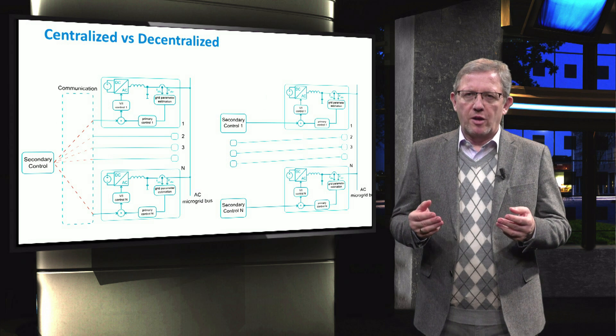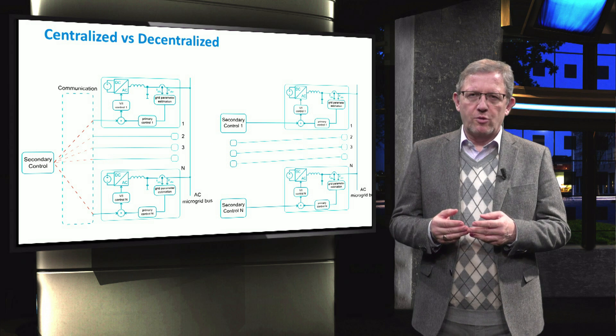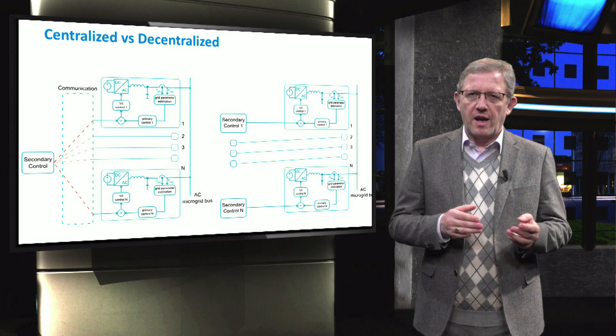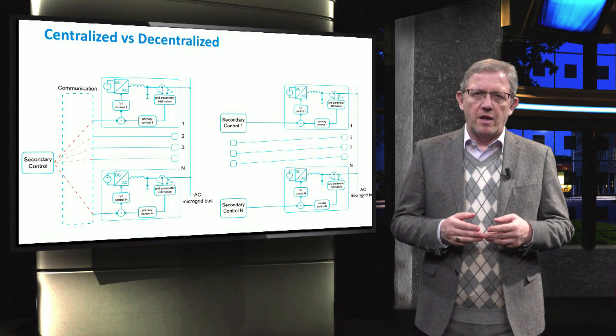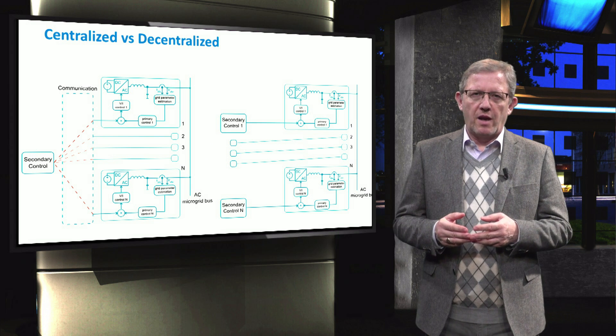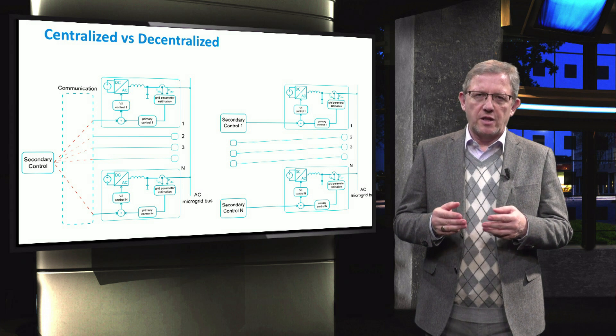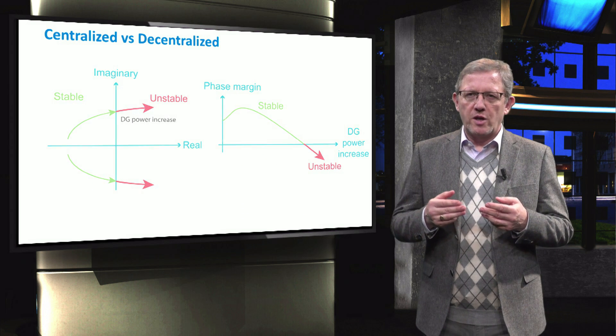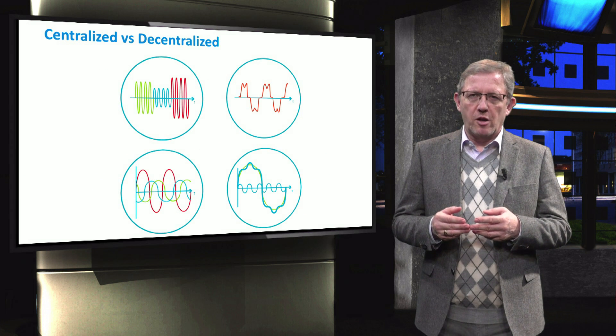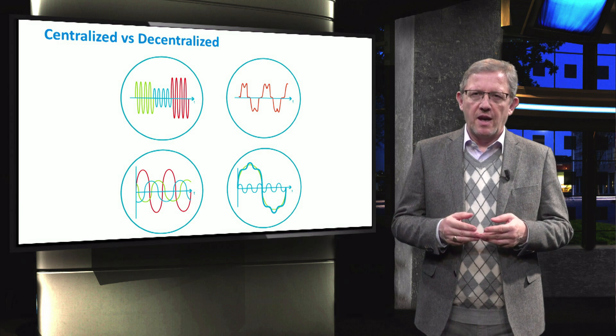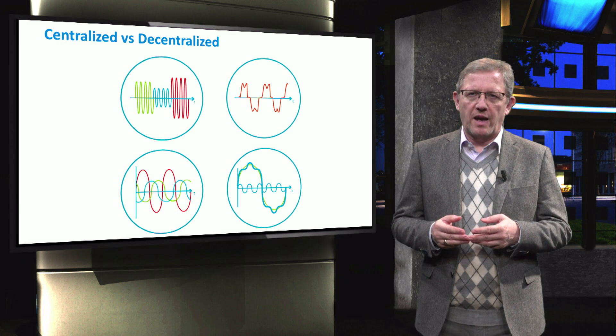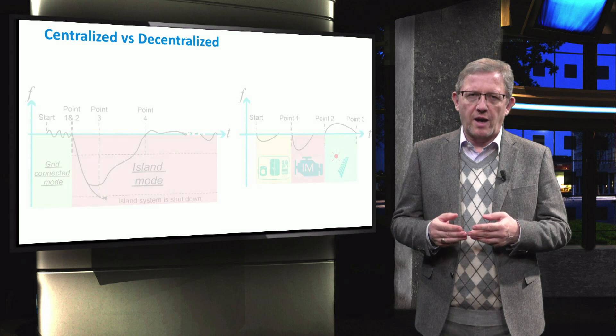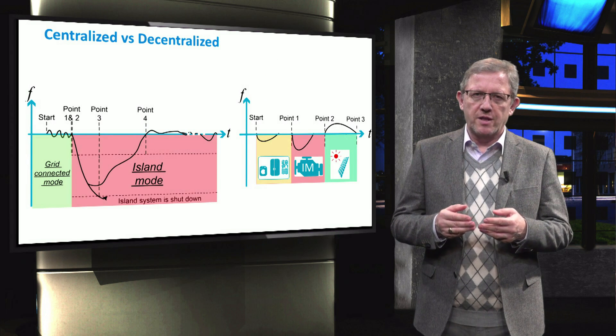At higher microgrid control level, you will learn about two general schemes of centralized and decentralized control. Each of these control schemes will have their own advantages and disadvantages with respect to the stability. Moreover, we need to ensure the power quality in terms of the voltage and frequency and enhance the continuity of supply, for which you will learn about the islanding and black start processes in microgrids.